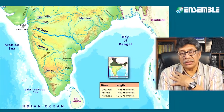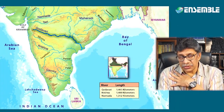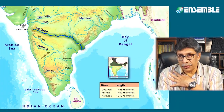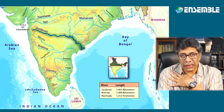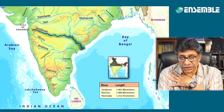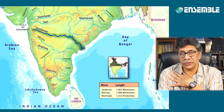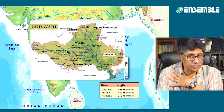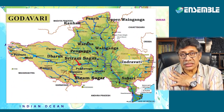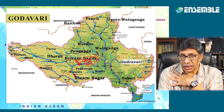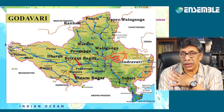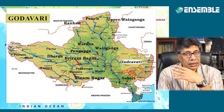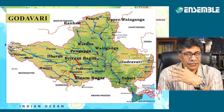Godavari is the largest of the peninsular rivers flowing into the Bay of Bengal. It is often called Dakshin Ganga because of its large size. It rises in Trimbak in Nasik district of Maharashtra and joins the Bay of Bengal in Andhra Pradesh.